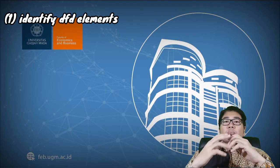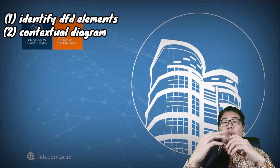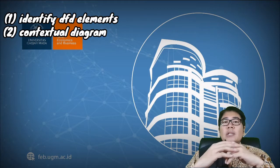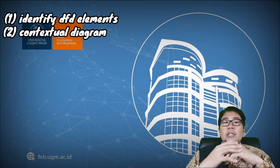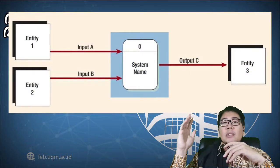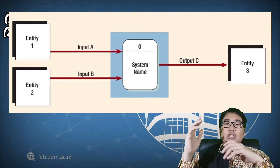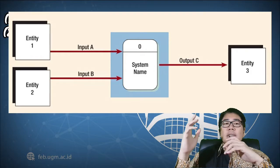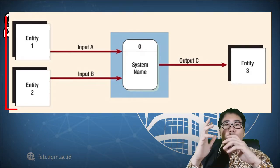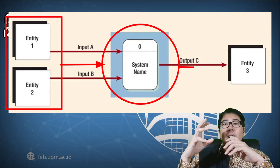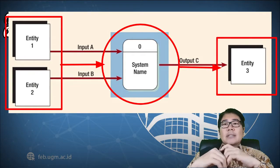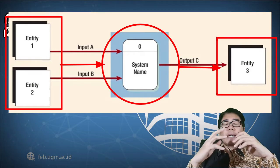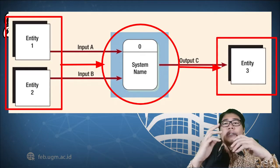The second step is to create a context diagram to describe the system or process in general. Usually the data store has not yet been identified here. An example of a context diagram is shown here: system zero has three entities — entity one, two, and three. Entity one and two are the source of data which send input A and B to system zero. After being processed by system zero, it will send an output C to entity three.